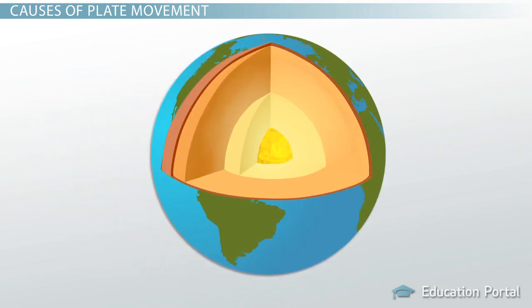The main theory of plate movement states that heat from the core causes convection cells in the mantle that move the plates as they ride on the mantle.